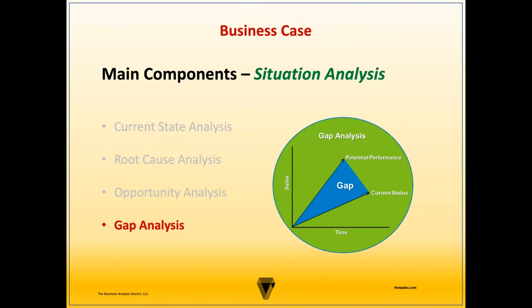Then we have our feasibility study. Here we're using a ranking matrix to assess our solution options — doing nothing, the minimum effort, and the maximum effort. The do-nothing option is to maintain the current state of the admissions process with no changes. In terms of technical feasibility, that is feasibly high — we definitely have the technology to do nothing. In terms of operational feasibility, I'm going to score this as low, because even though we do have the operations to not do anything, it's not sustainable from an operations perspective. Same thing for the economic perspective — even though it won't cost anything to do nothing, financially it's not feasible to continue down this path. So this is going to have an overall viability score of one.